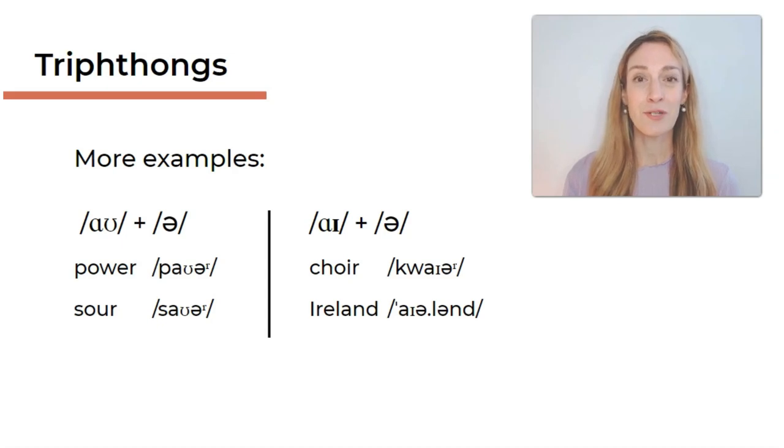Now again, I have put the phonemic transcript next to those words, next to the spelling. So you can see power, sour. Again, this is just one syllable here. There is no period mark to show any syllable boundaries. One syllable, and aʊ and ə together form a triphthong in both of those words.